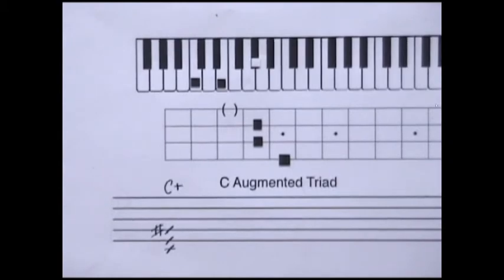We found the notes of our augmented triad by first selecting the 1, 3, and 5 degrees of the major scale. And then we raised the fifth degree. We've looked at the locations of these notes on the staff, on the piano, and on the ukulele.